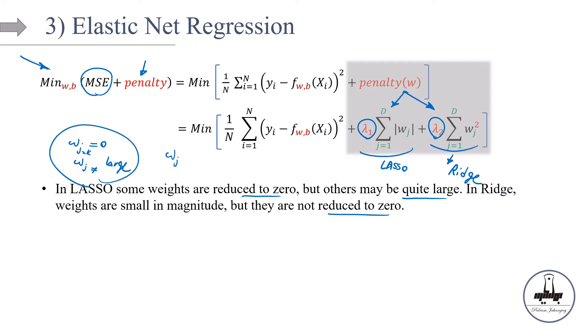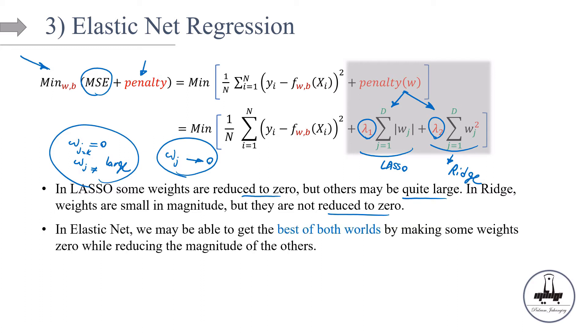For ridge, we reduce the features, we shrink the coefficient of the features, maybe send them towards zero. So not all of them are large, but at the same time, not many of them are zero. Now let's say, can we combine these two ideas? Can we get the best of two worlds? And the answer is yes, we can do elastic net. We may be able to get the best of the two worlds by making some weights zero, forcing some of those w's to be exactly equal to zero, while reducing the magnitude of the others as well. So a combination of the two.